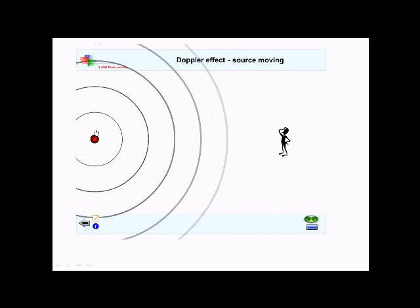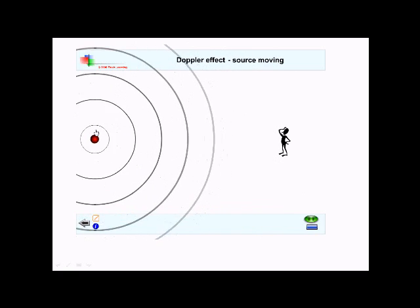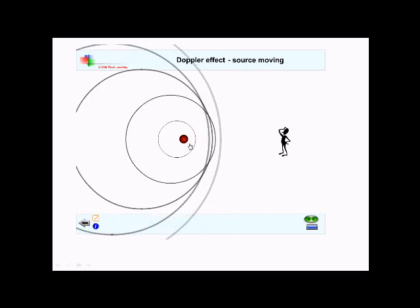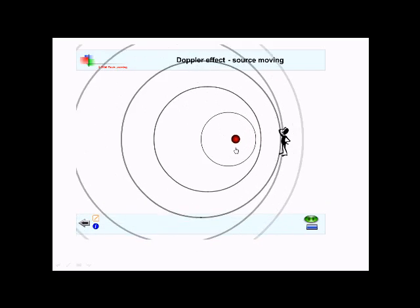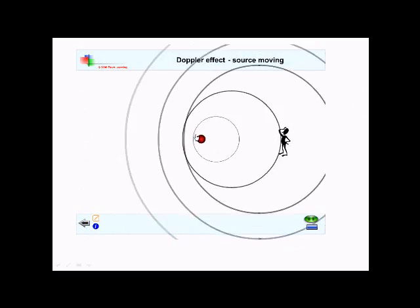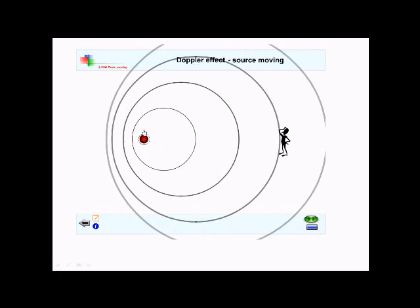This is the reason why if you hear an ambulance siren coming towards you and away from you, its sound seems to change. So as it moves towards, the wavelength decreases and the frequency increases. As it moves away, the wavelength will increase and the frequency will decrease.